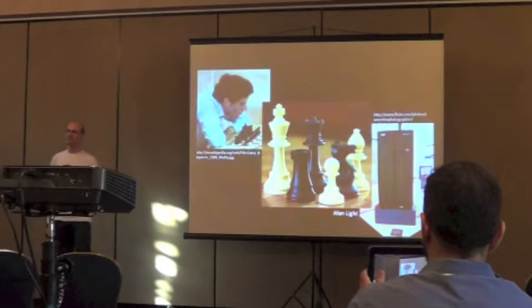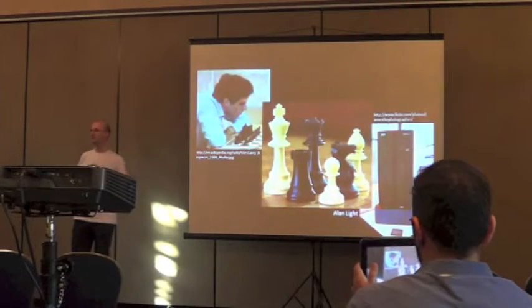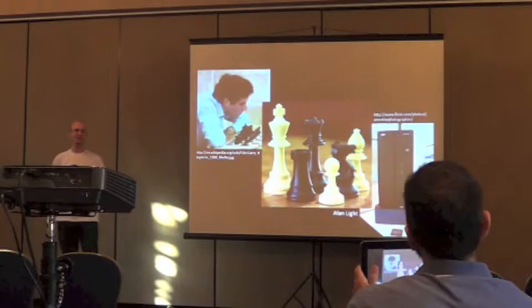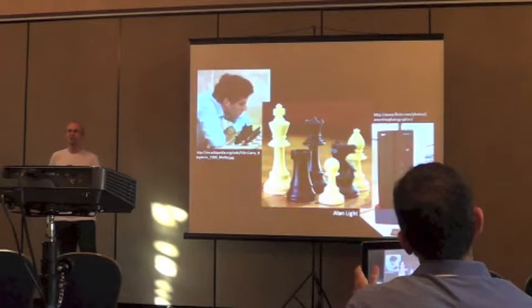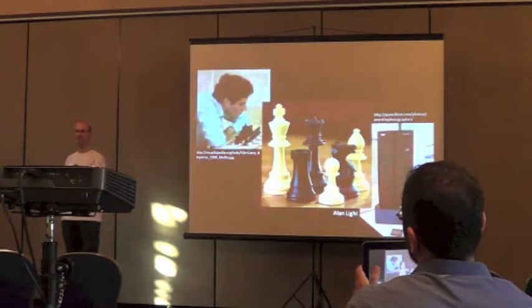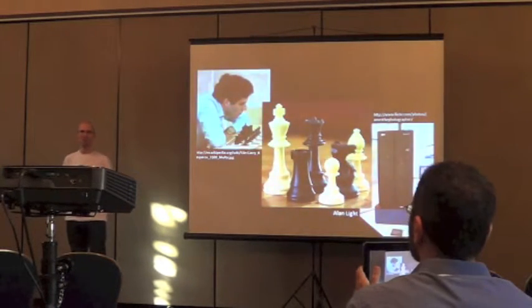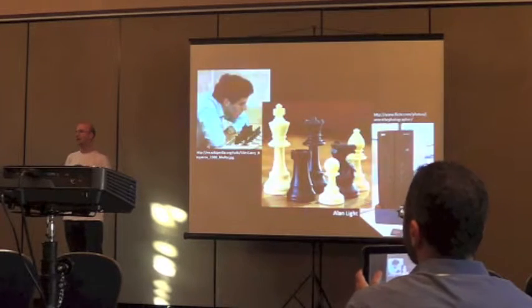At the time, there were some accusations that IBM could perhaps have cheated to achieve this, which raises the question: how could you possibly cheat? Because the whole purpose was to use a computer, and Kasparov was already the best human player in the world, so how would that be possible?